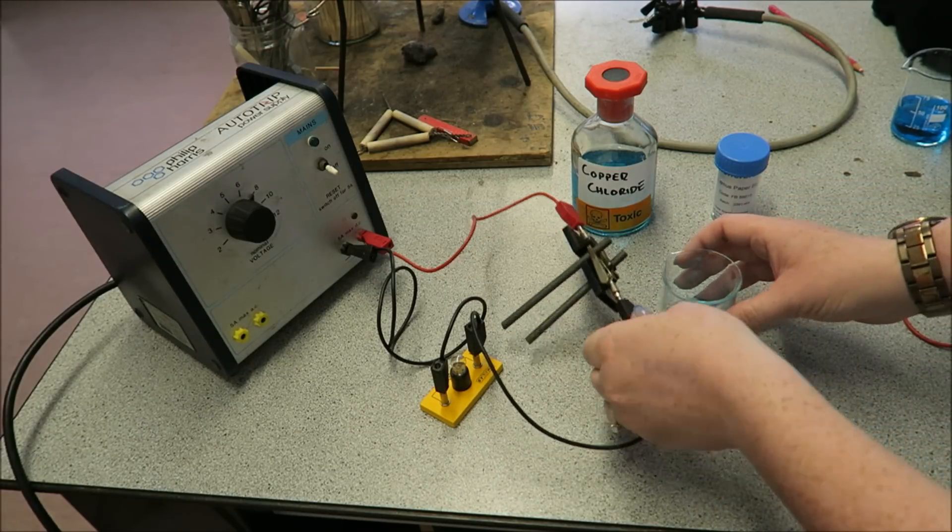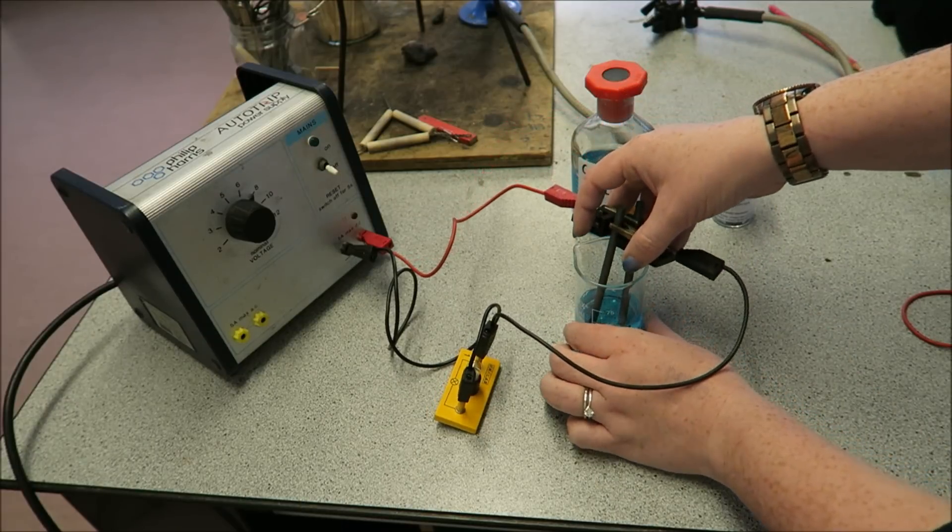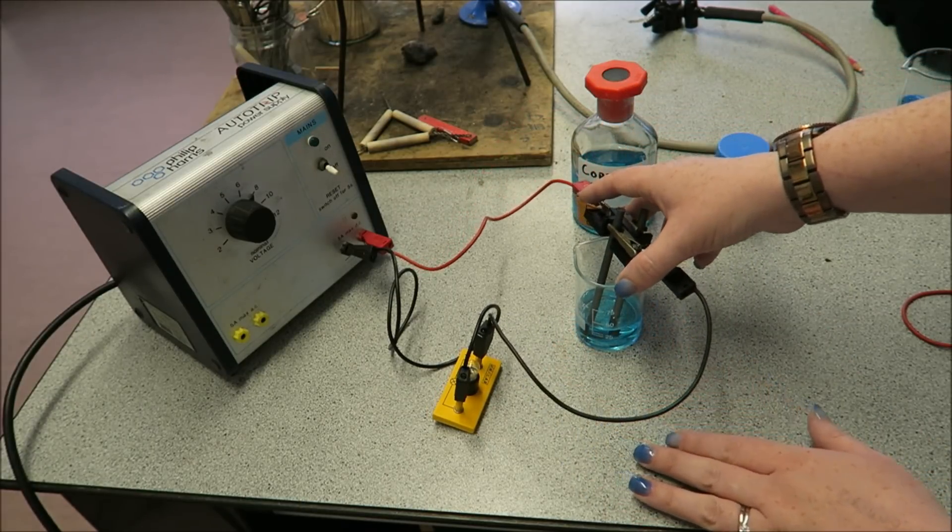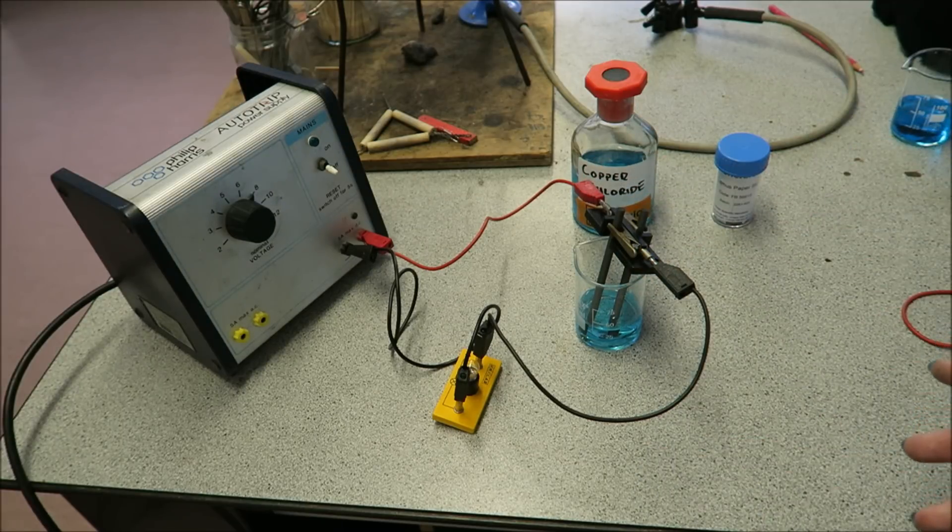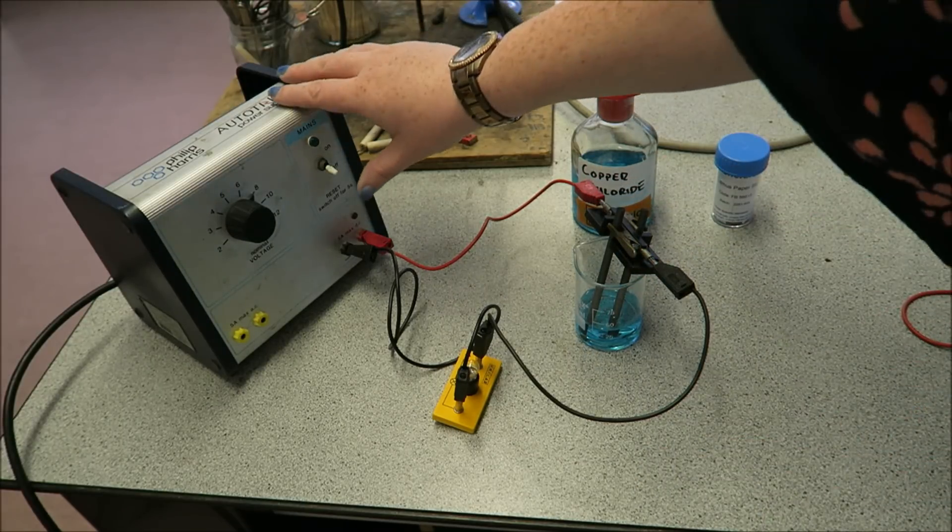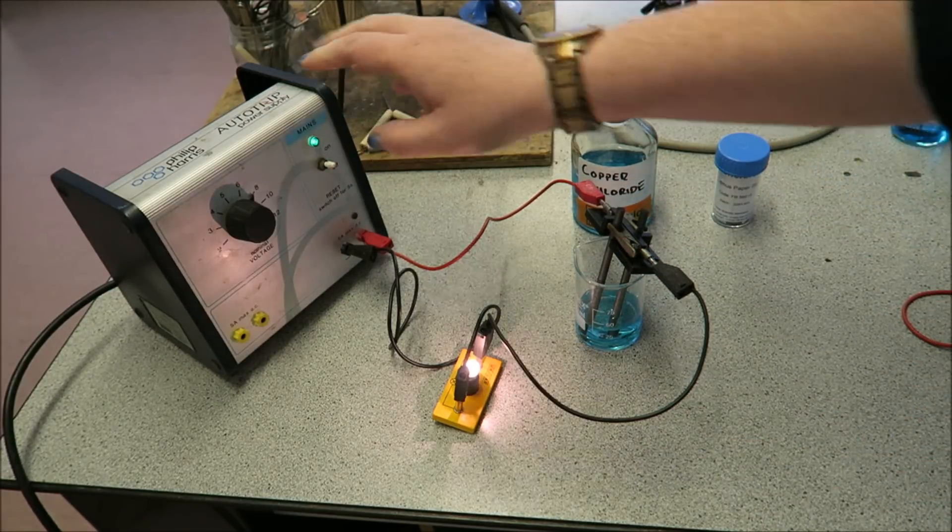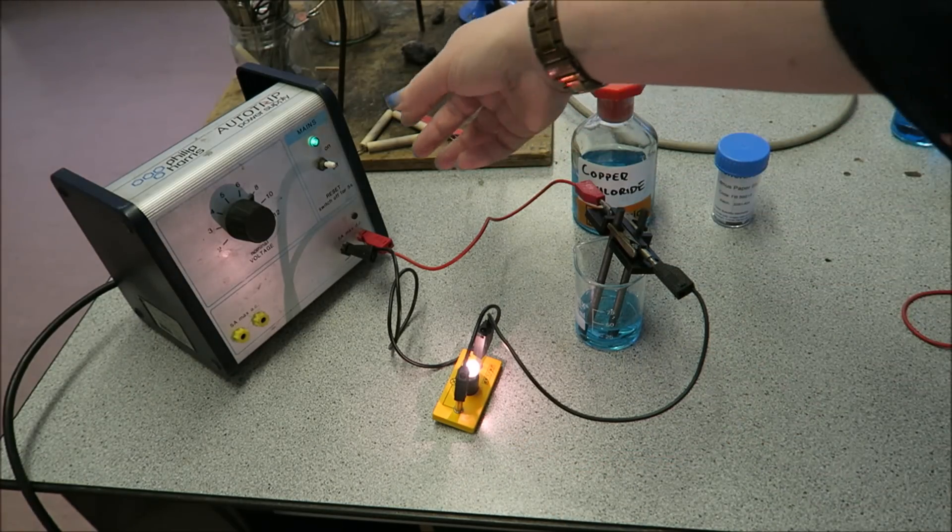What we're going to do now is just pop the electrodes into the solution. And it's really important that your electrodes are not touching. And turn it on. We can see the bulb is on so we can see a circuit has been formed.